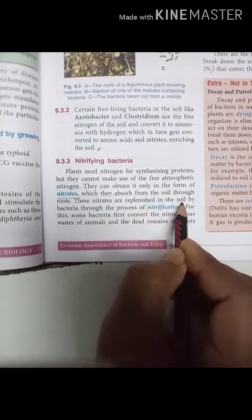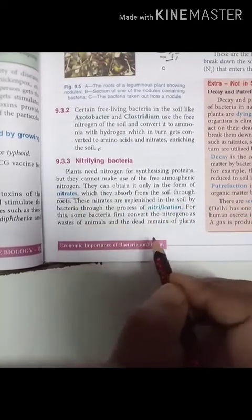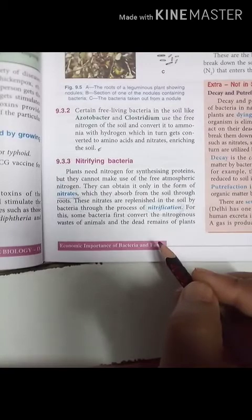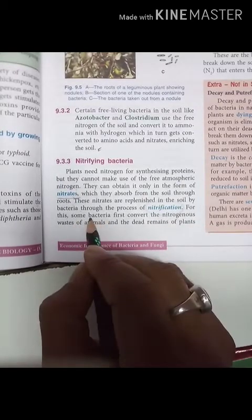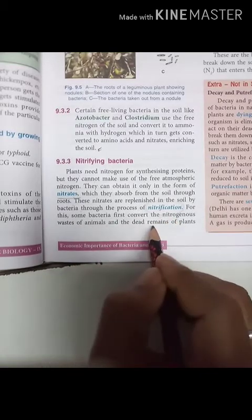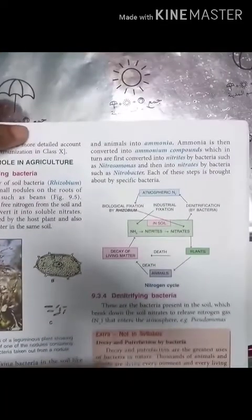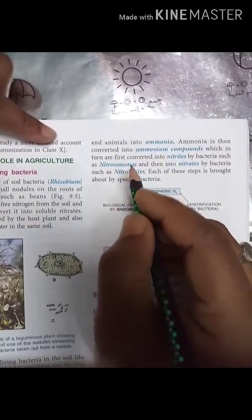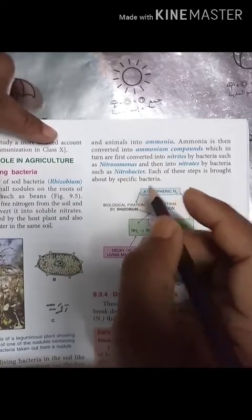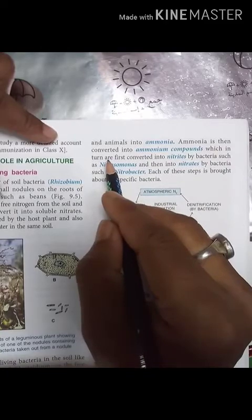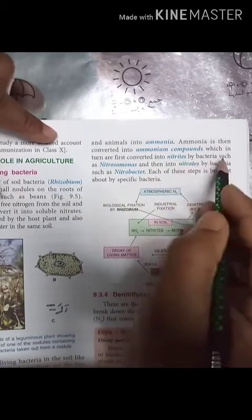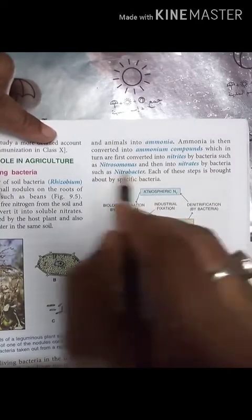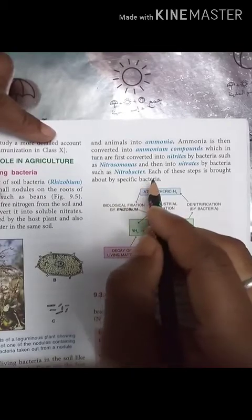These nitrates are replenished in the soil by bacteria through the process of nitrification. Nitrification is the conversion of atmospheric nitrogen into nitrates. Some bacteria first convert the nitrogenous waste of animals and dead remains of plants and animals into ammonia. Ammonia combines with protons to become ammonium compounds, which are first converted into nitrites by bacteria such as Nitrosomonas and then into nitrates by bacteria such as Nitrobacter.